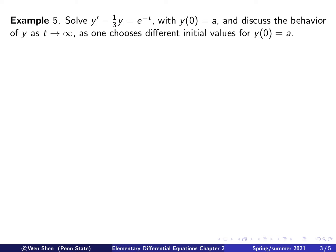Our next example is a problem with an initial condition. We have the equation y prime minus one third of y equals e to the negative t, with initial condition y of 0 equals a. We specify a so we can see how the solution depends on it, and we wish to discuss the behavior of the solution y as t goes to infinity and how it depends on different values of a.